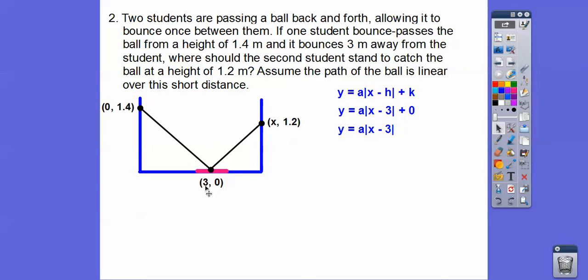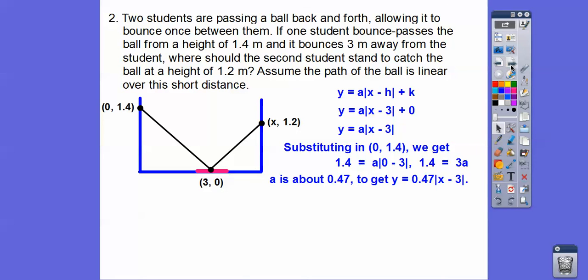Let's go ahead and get going here. So HK, so we plugged in 3 comma 0. So there's our function right there, and now we're going to substitute in 0, 1.4 to get A. So here we go, and then we get divide. So we get A is about 0.47 because I divided 1.4 divided by 3. So when we did 1.4 divided by 3, we get about 0.47 right there. So there's our equation right there.